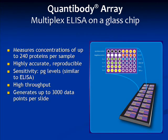Ray Biotech's Quantibody Array is a multiplex ELISA on a glass chip. It can quantitatively measure the concentrations of up to 240 different proteins per sample. The data is highly accurate and reproducible, with sensitivities in the low picogram range. The Quantibody Array offers the advantage of high throughput analysis, and generates up to 3,000 data points per slide.